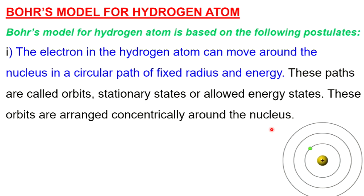In Bohr's model of the hydrogen atom, there are some postulates. The first postulate: the electron in the hydrogen atom can move around the nucleus in a circular path of fixed radius and energy. These paths are called orbits or stationary states, which are allowed energy states. These orbits are arranged concentrically around the nucleus.